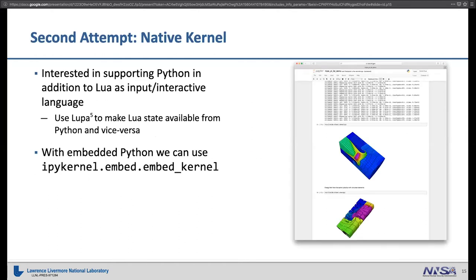Along the way, some people were complaining they don't know Lua and we should have a Python shell too, because a lot of our legacy production codes are Python and many users use Python for other things. I looked at how to get Python without duplicating all our Lua source. There's a project called Lupa which bridges between Python and Lua — you expose your Lua state to Python and Python objects to Lua. So in Python you can say lua_state.simulation.time_step or .blast.kinetic_energy with tab complete — it looks like a Python dict but it's really a Lua object.